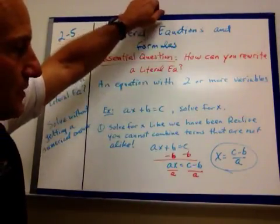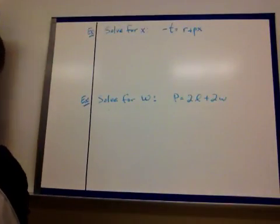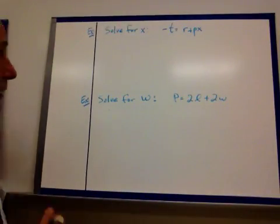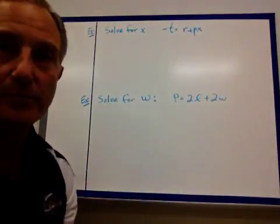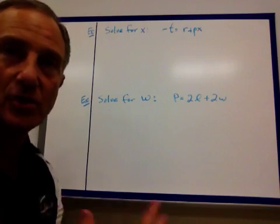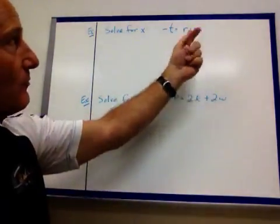All right? Let's take a look at a couple more examples. All right. We want to solve for x again. We have negative t equals r plus px. Just like what we did the last two weeks. I want to solve for x.